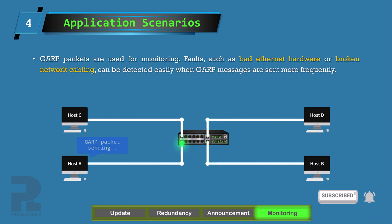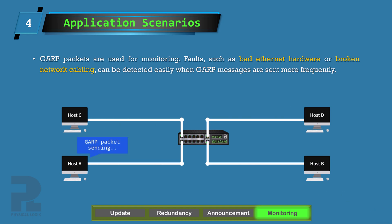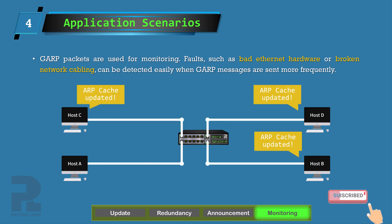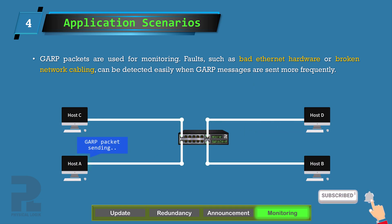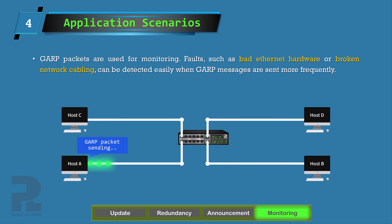There are some literatures where the Gratuitous ARP message is said to provide duplicate address detection. Although this may seem so in some cases, it is not exactly true. We'll do a comparison between the Gratuitous ARP message and the ARP probe and ARP announcement messages in the next video.